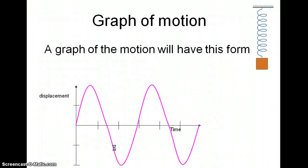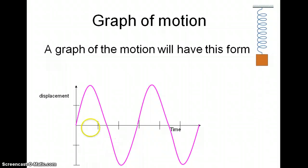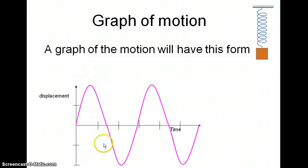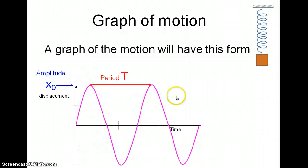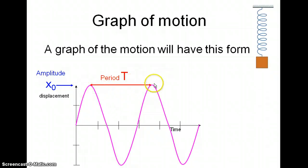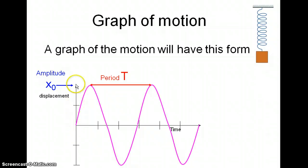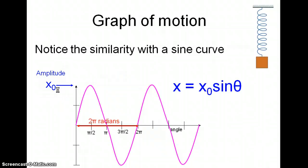Now, if we graphed this motion — if you imagined graphing the displacement at different times — we'd get something like this. And of course you recognise this. This peak-to-peak distance would indicate the period, and this distance here will be the amplitude — we give the symbol x₀ to the amplitude. Of course, that looks very similar to a sine wave. A sine wave has a period of two pi radians, and amplitude x₀.